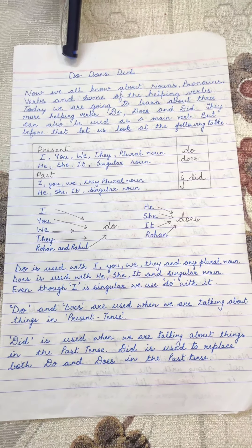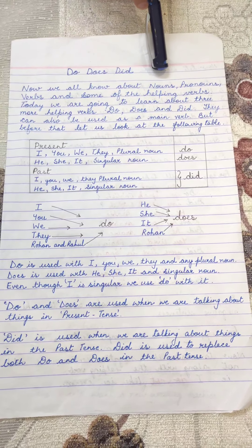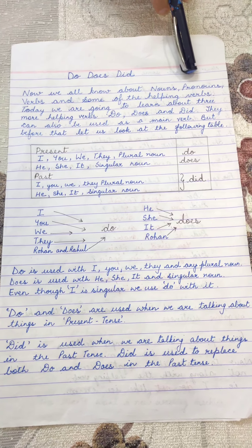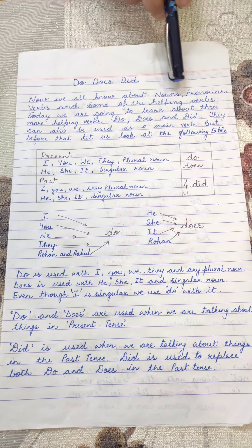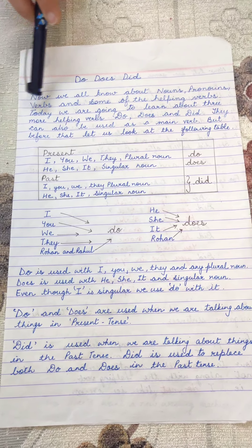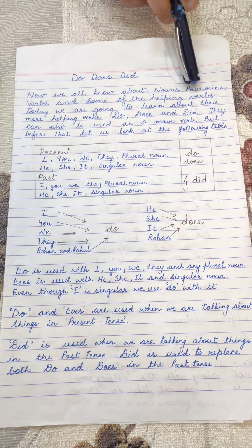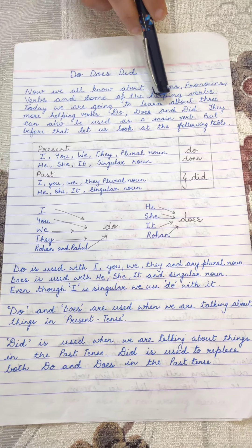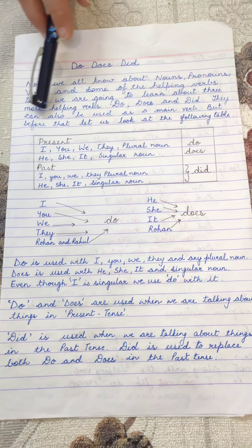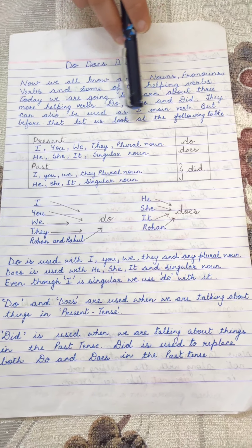So today's topic is do, does and did, and they are also helping verbs. Now we all know about nouns — the naming words, that is the names of persons, places, animals or things. Pronouns are the words which are used in place of nouns. Verbs are the action words and they tell us what somebody is doing. We also know some helping verbs: is, am, are, was. Today we are going to learn about three more helping verbs: do, does and did. They can also be used as a main verb. But before that let us look at the following table.